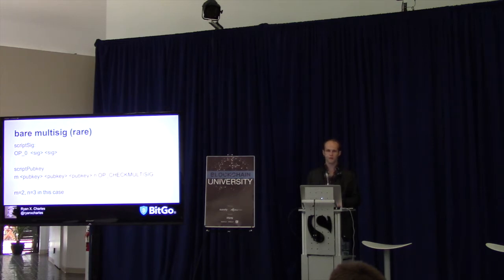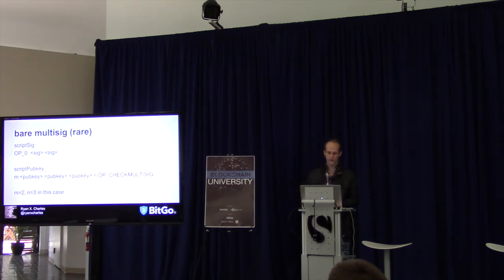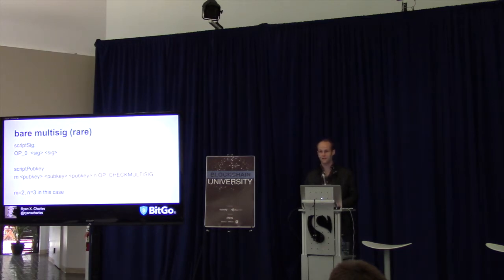There's also bare multisig. Before the era of pay-to-script-hash, you had to pay to a complicated output — you had to actually put the full script in the output. You can still do this today and it's still a valid transaction, but it's very cumbersome because you can't just give someone an address. The script pub key shows M, then you push three public keys to the stack, then N, then op-check-multisig. There's an extra op-zero because op-check-multisig has a famous bug where it pops one too many items from the stack, so you must push a blank value to prevent the transaction from being invalidated.